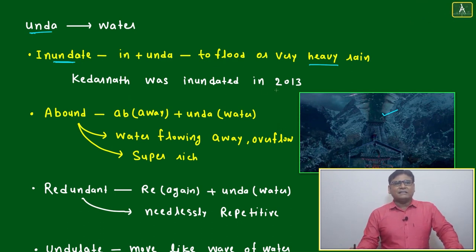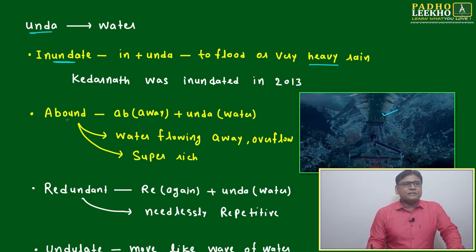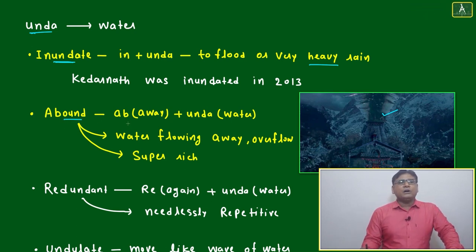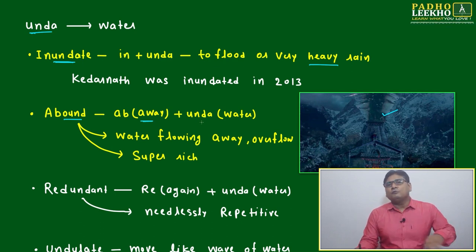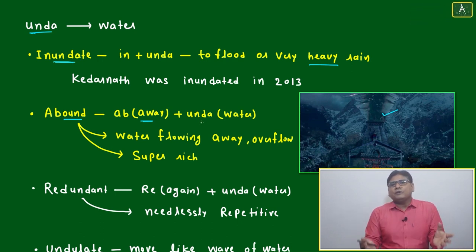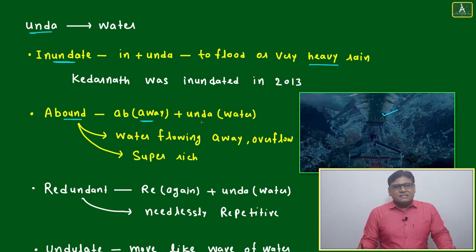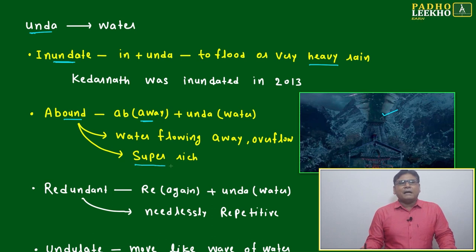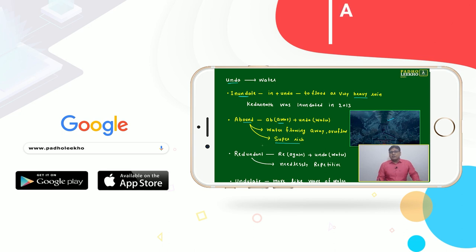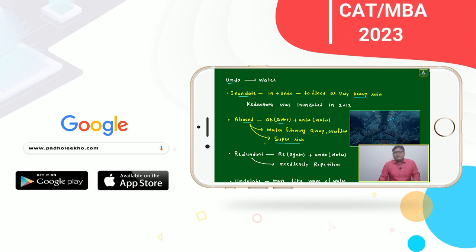Kedarnath was inundated in 2013. Related to the same root, there is the word 'abound' — 'ab' means away and 'unda' means water. If water is going away, imagine a bucket filled beyond its capacity: it will overflow. You can apply the same thing figuratively — whatever your capacity of money or requirement, if you have more than that, then you are an abundant person, a super rich person.